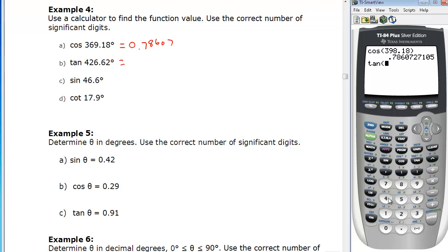The tan of 426.62 degrees, we find that that's 2.3131 with five significant digits. Sine of 46.6 degrees, that has three significant digits, so that will give us 0.727 when rounded to three digits.